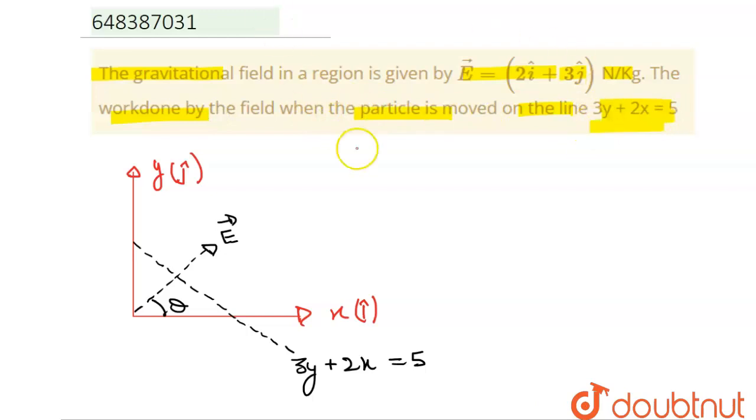So let's solve this. First of all, this is our system. If we plot this line, this equation 3y plus 2x equals 5, we will get this line.